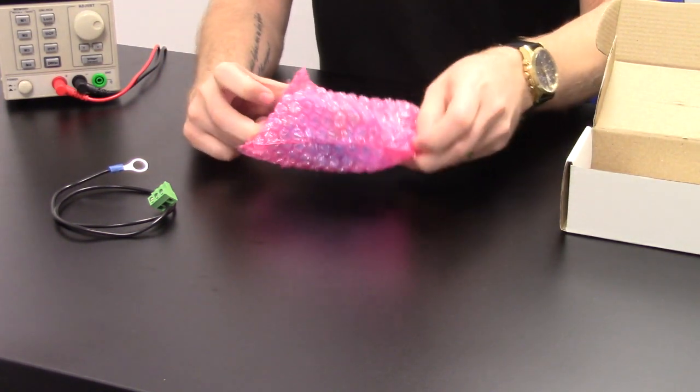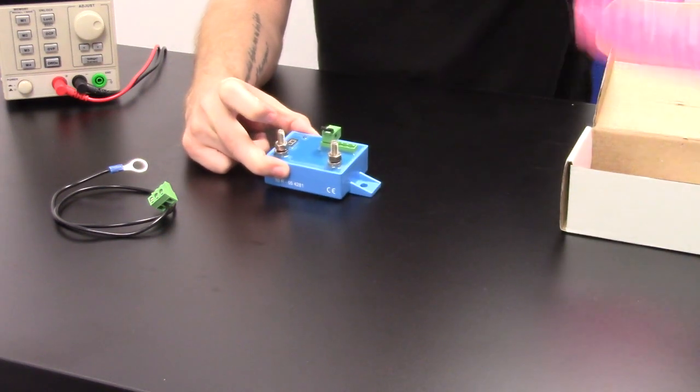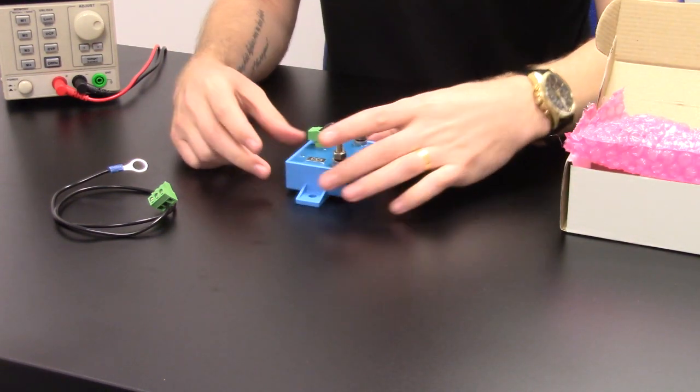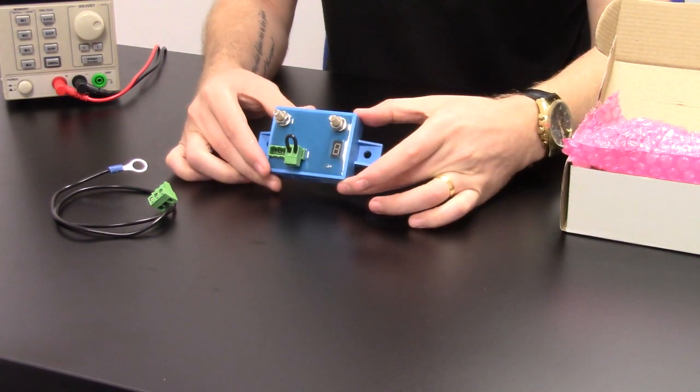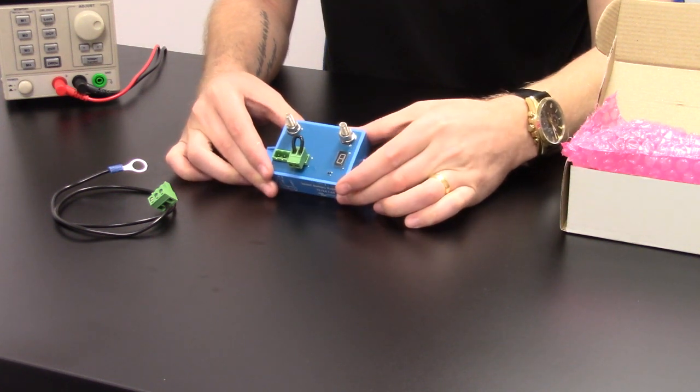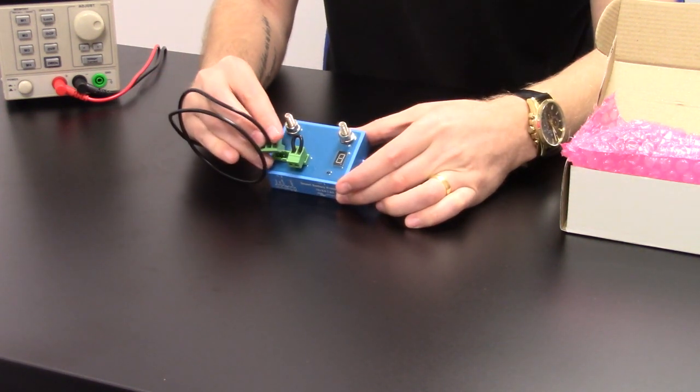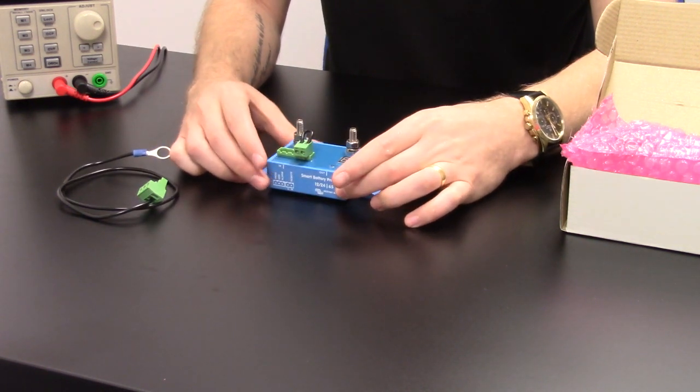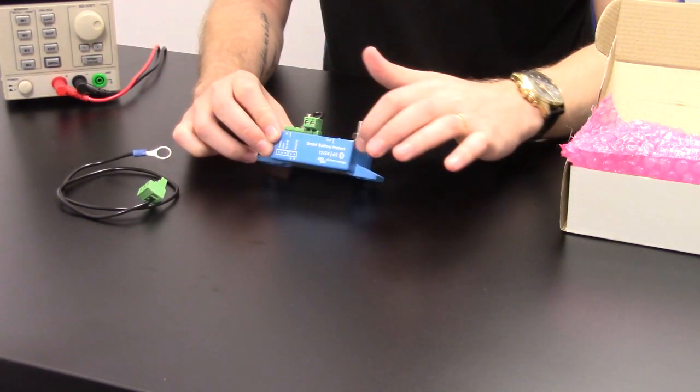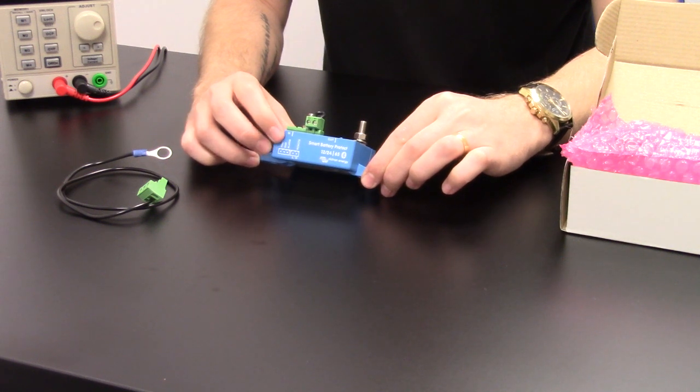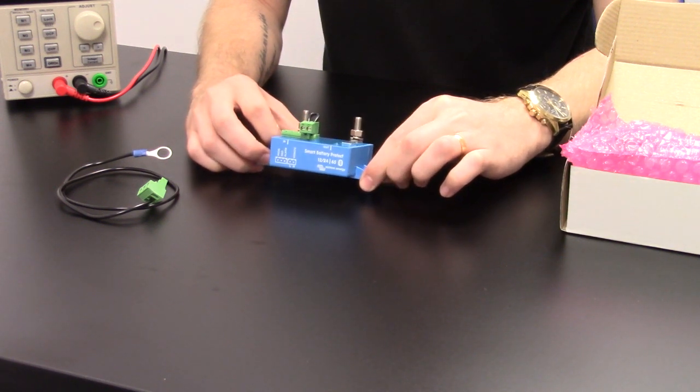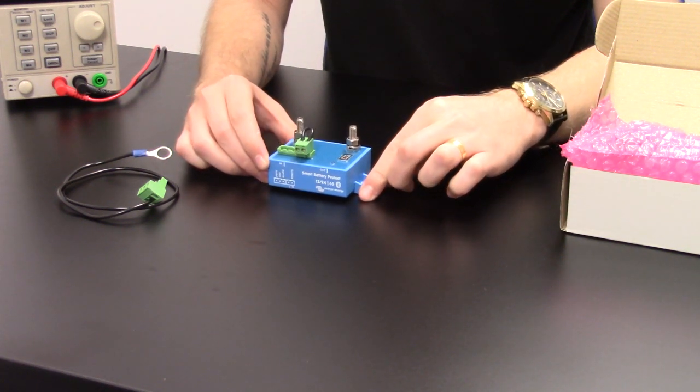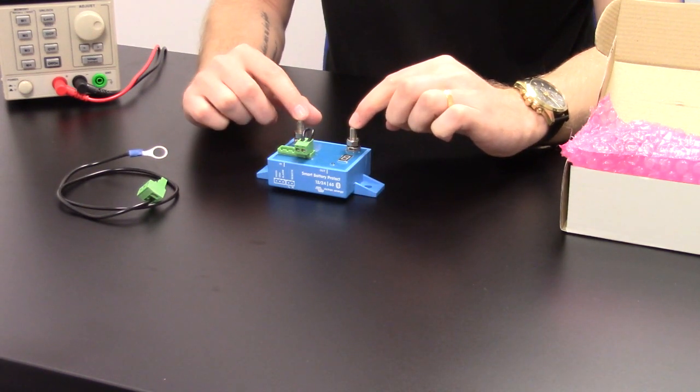Inside you'll find an anti-static bag with the smart protect unit itself. The block will be inserted into this section here. You'll see at the front of the unit it gives you an indication as to the unit model and the output and input terminals located at the top of the unit.